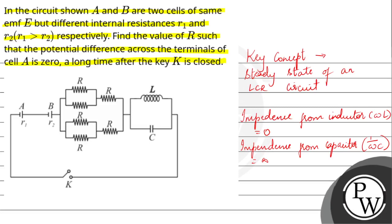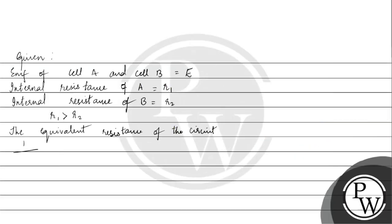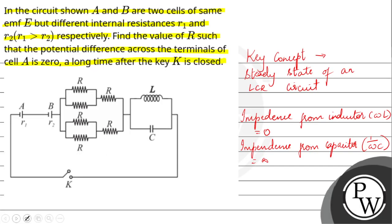We can see that there are two resistances in parallel and then one in series, and that combination is again in parallel with two resistances in parallel and one resistance in series. This is the parallel combination of resistors. The equivalent resistance will be 1 by R-equivalent, which gives us 1 by (R/2 + R). This is the equivalent of R/2 + R.